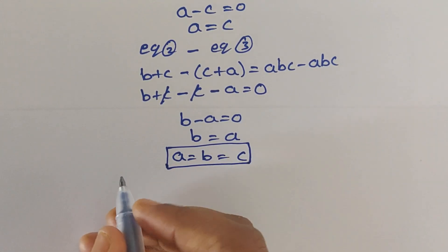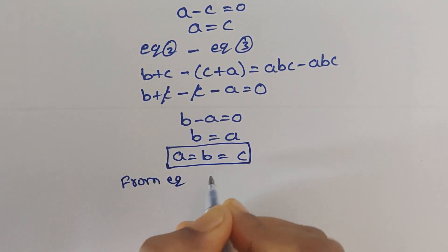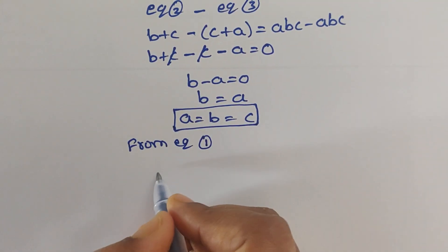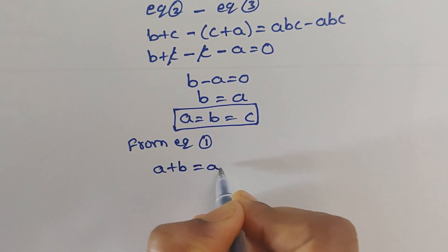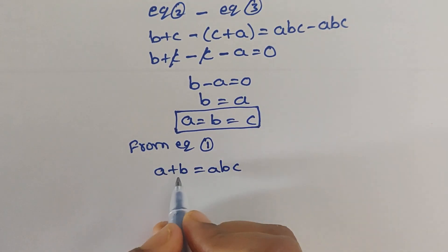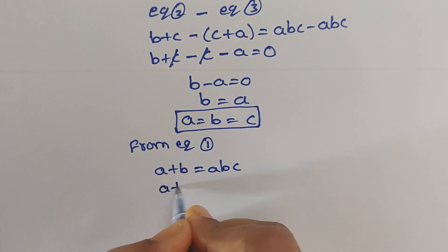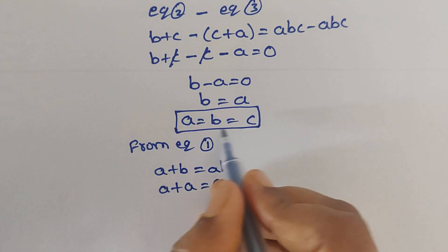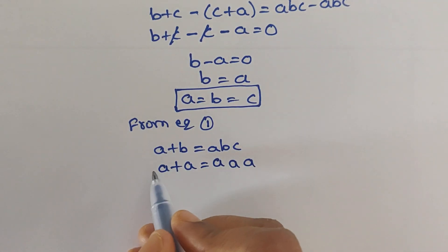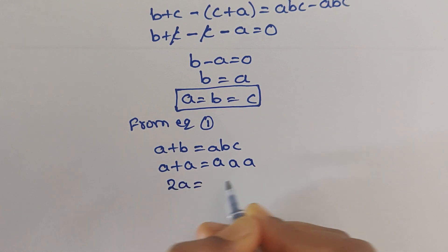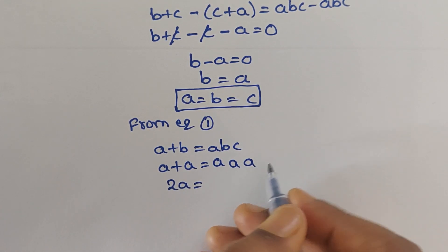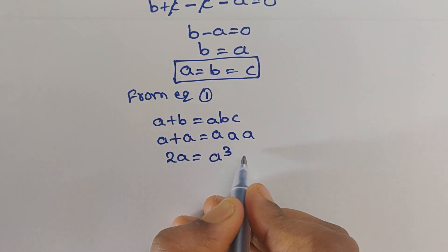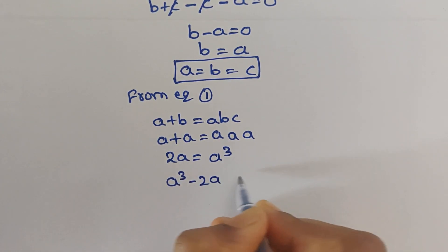From equation 1, a plus b equals abc. Now substitute b equals a and c equals a. So a plus a is 2a, and a times a times a equals a cubed. Writing this out: a cubed minus 2a equals 0.